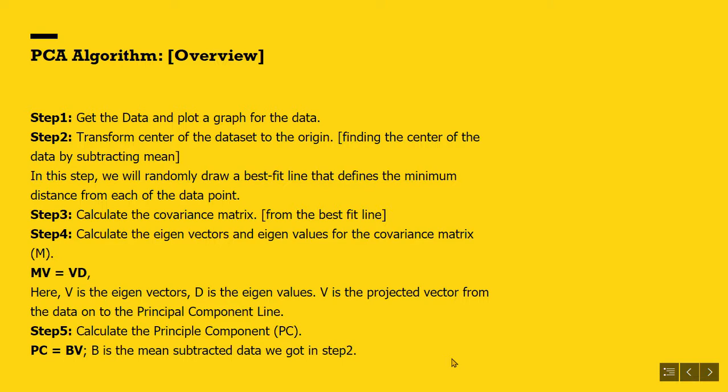Step 5: Calculate the principal component. PC equals BV. Where B is the mean subtracted data, we found in step 2, and V is the eigenvector. The eigenvector V is also called loading. It tells us that how much a data point is important over others.